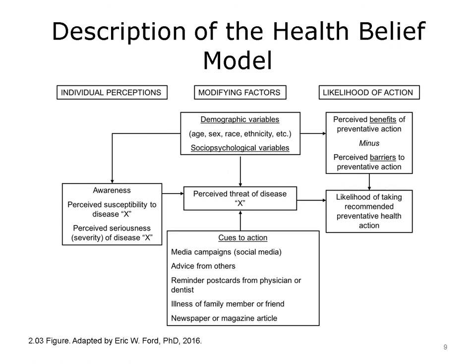Let's take a longer look at the health belief model presented as a flowchart, moving from left to right. Individual perceptions on the left depend on two elements: susceptibility to a disease, and how serious they think that disease is. Say you're a middle-aged man from a socioeconomic background where cardiovascular disease and heart attacks are not unusual — you might perceive yourself to have elevated susceptibility. These two elements, perceived susceptibility and perceived seriousness, factor into your overall perception of disease threat, which appears in the center box of the model.